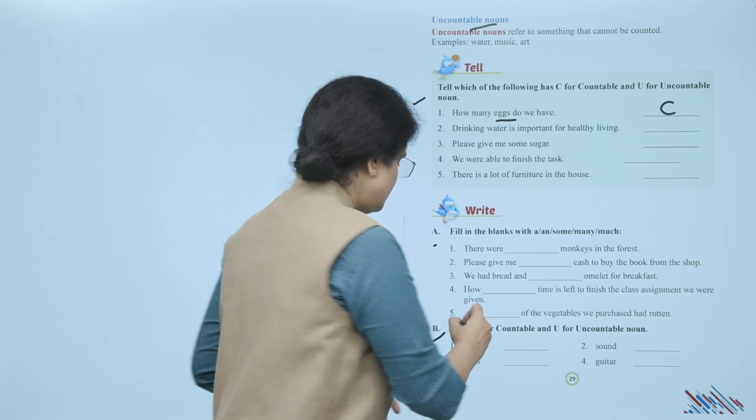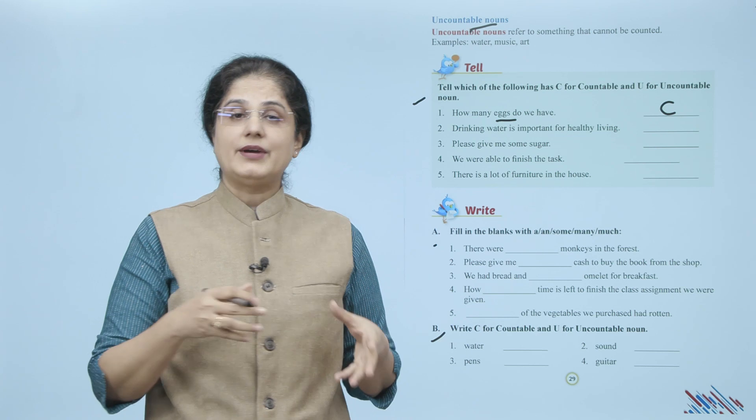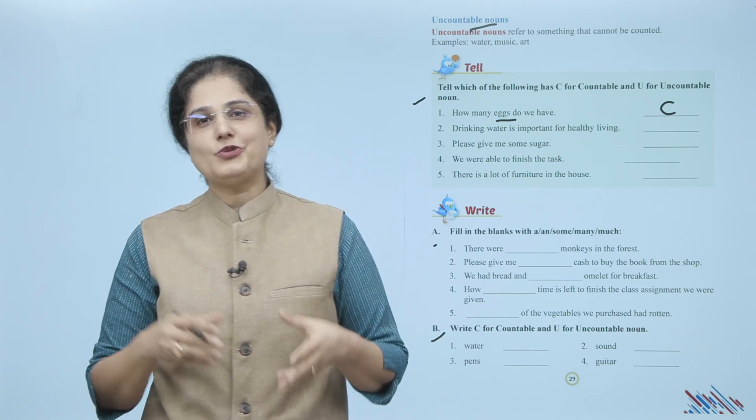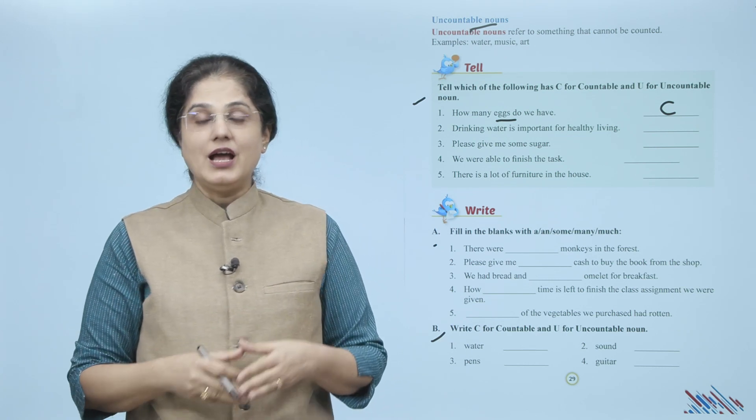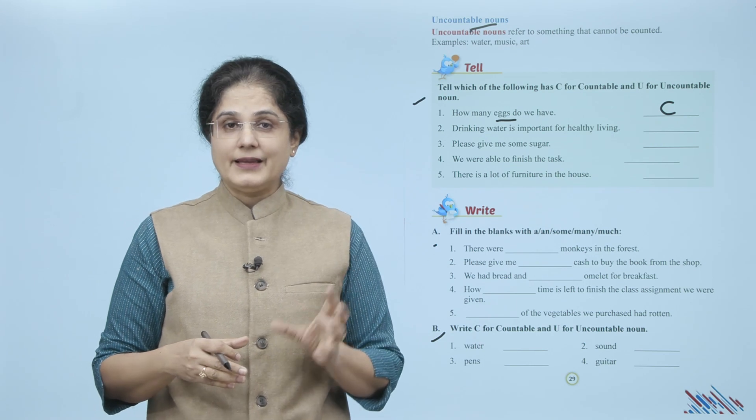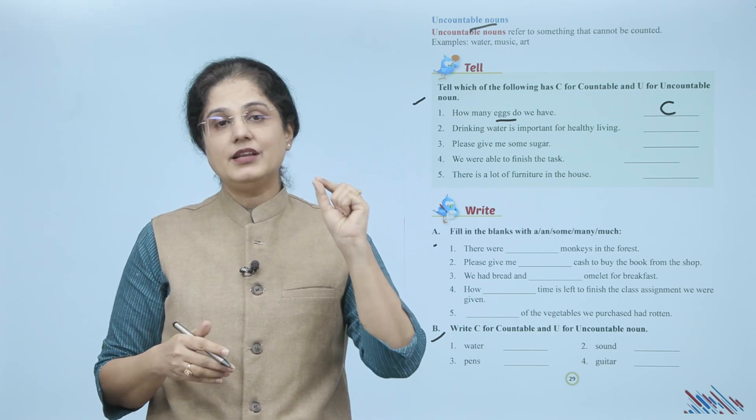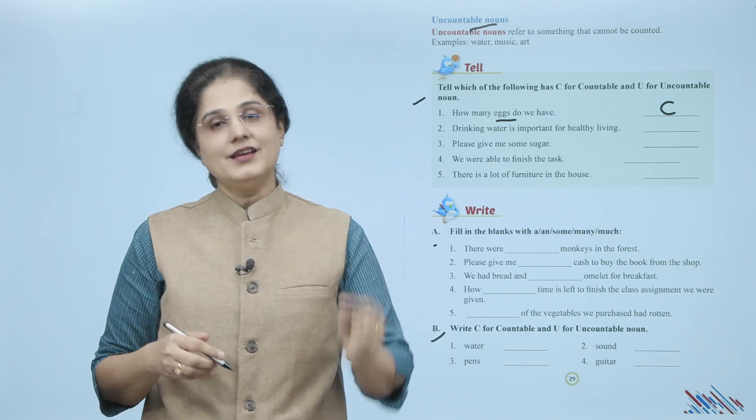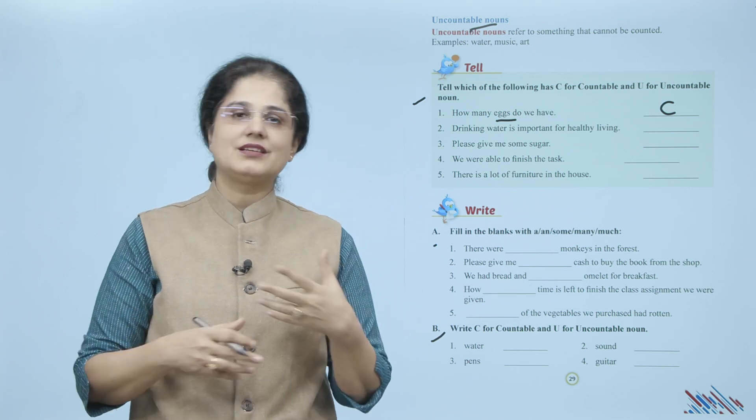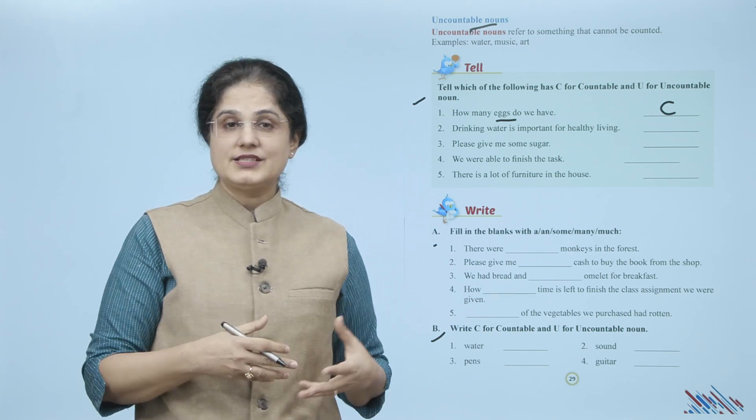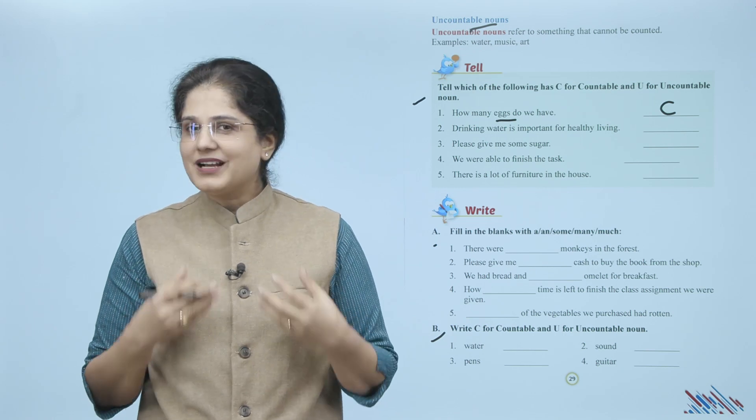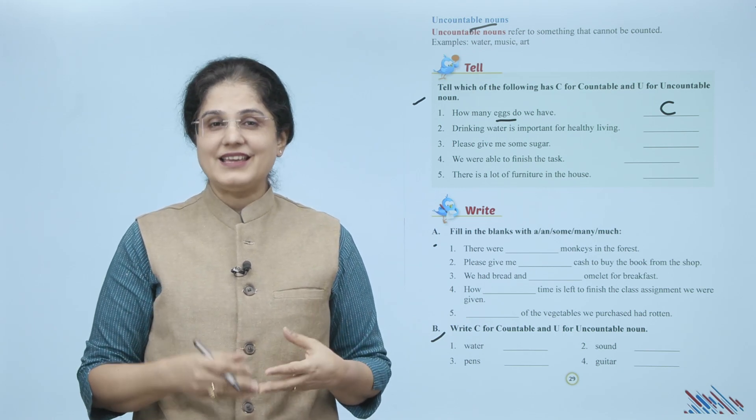Now in this exercise, write C for countable and U for uncountable noun. Jo aapko nouns diye gaye hain uske saamne aap C lagayenge agar ye wala noun aap count kar sakte hain, nahi toh U lagayenge agar aap isse count nahi kar sakte. For example: water - water ko aap count nahi kar sakte toh aap kya lagayenge? U. Isi tarah se aap baaki blanks bhi fill karein.